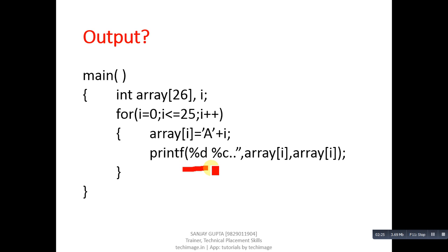Then printf is printing array[i] two times: first with %d and another with %c. You can see the output - it is printing 65 A, 66 B, 67 C and so on. Initially value of i is 0, and capital A's ASCII value is 65.